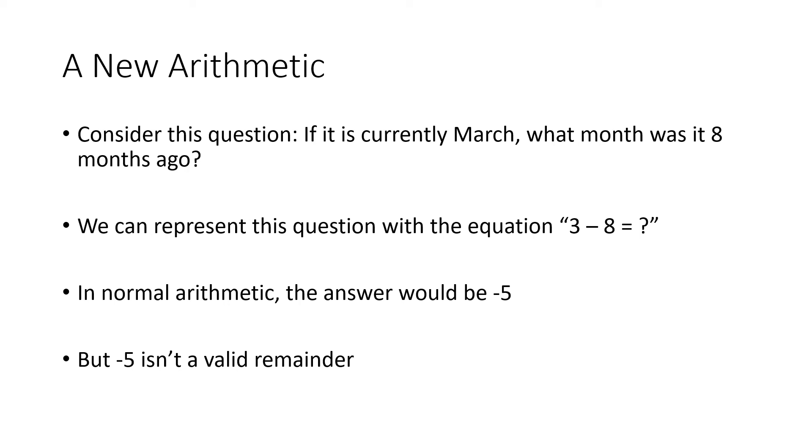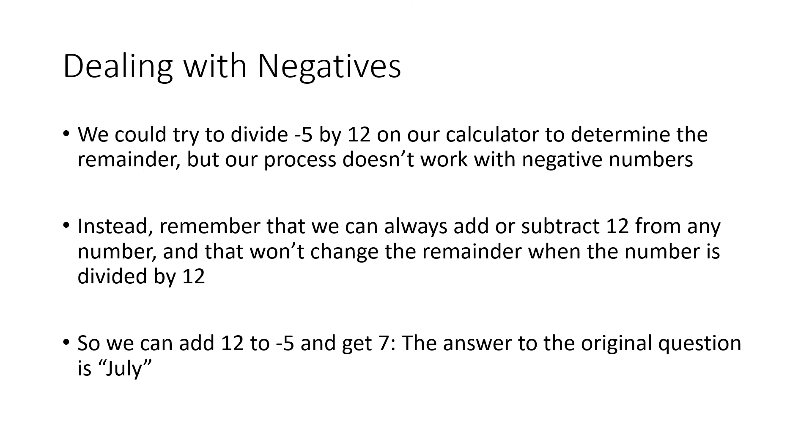So we could ask the question, if it's currently March, what month was it 8 months ago? So again, we're thinking months ago, which means subtraction rather than addition. If we're going forward in time, we'd be adding. We're going backwards in time, so we're subtracting. So that would be the equation 3 minus 8 equals what? Well again, normal arithmetic, 3 minus 8 would give us negative 5. But negative 5 can't be your remainder. Our remainders are never negative. And we could try to divide negative 5 by 12 and use the method that we talked about before, but that doesn't really work with negative numbers. So instead, the way that we're going to think about negatives is remembering that if we're talking about division by 12, adding or taking away any group of 12 doesn't change the remainder. So instead, what I'm going to do is I'm just going to take my negative 5 and add another group of 12. And that's going to give me 7. And 7 is a valid remainder. 7 is July. So when you get negatives occasionally, it's probably easier to just add the modulus if you need to.